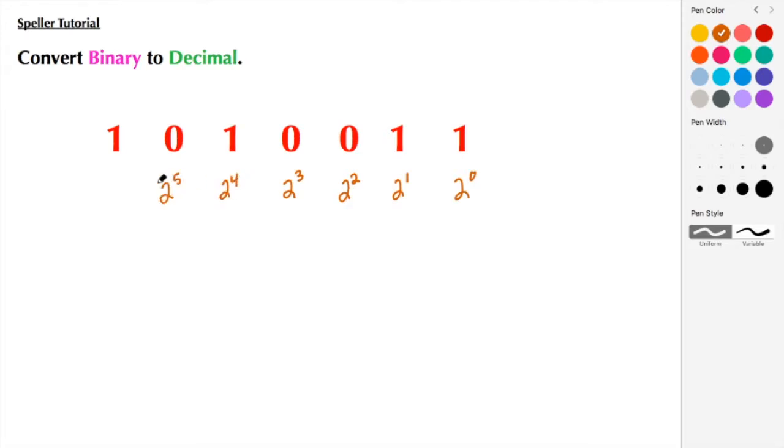2 to the 4th, 2 to the 5th, and 2 to the 6th. Now, 2 to the 0 is 1, 2 to the 1st power is 2, 2 to the 2nd power is 4, 2 to the 3rd is 8.